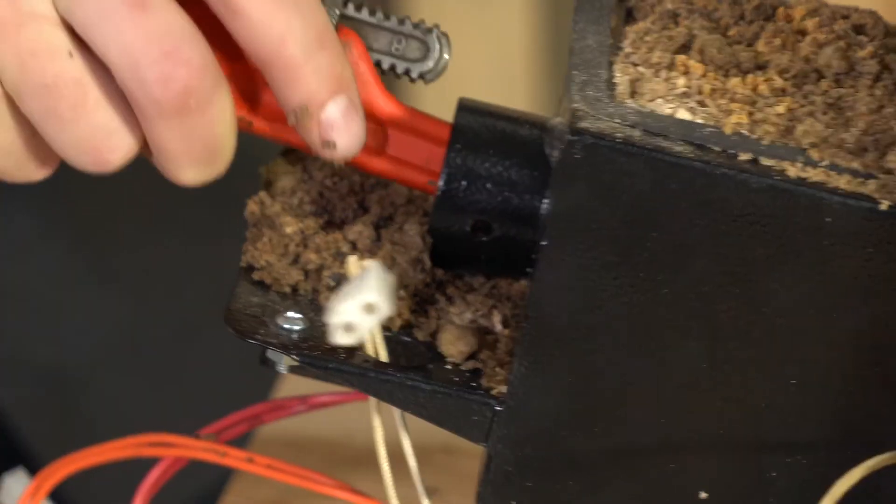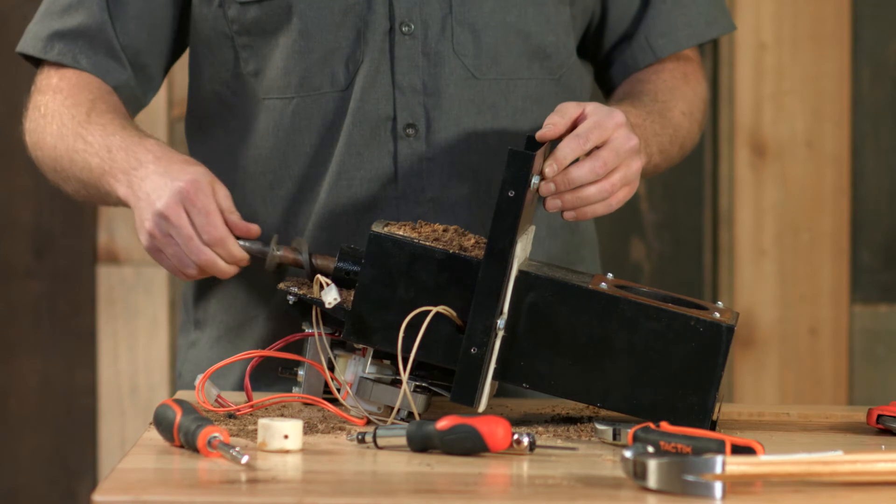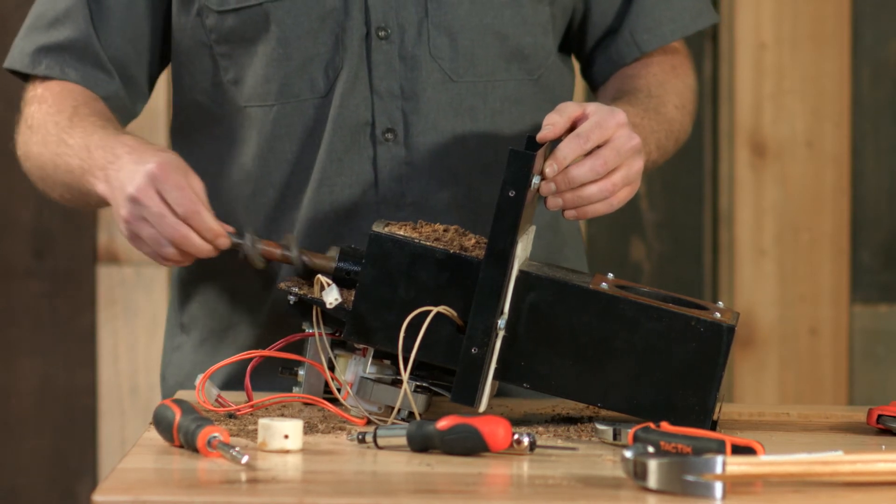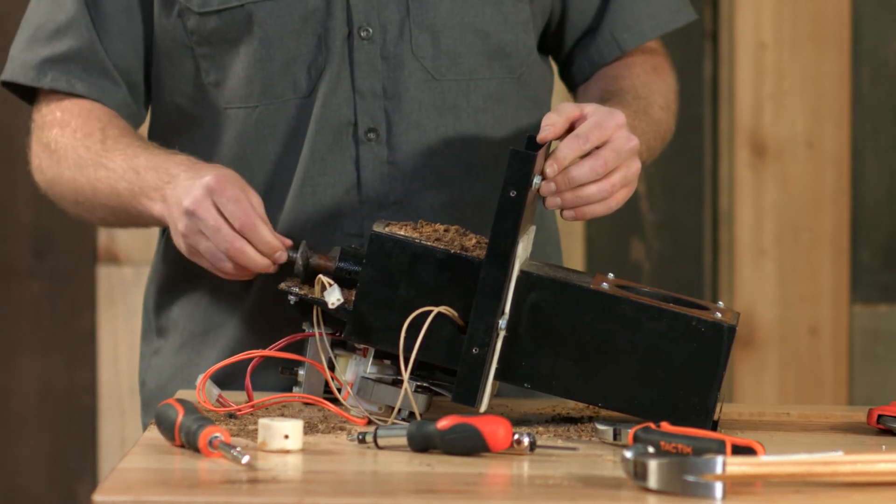Once you get the auger removed from the auger shaft, you can either use a hammer or something with a flat edge. Sometimes the auger actually works really well also. You just spin it, push it in and out and it should help clear the stuff that's seized up inside there.